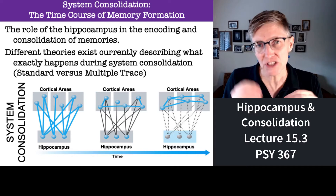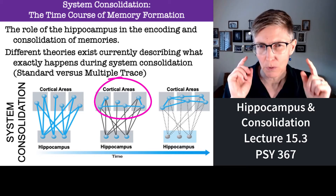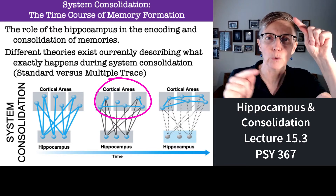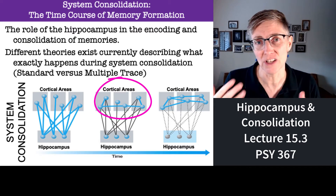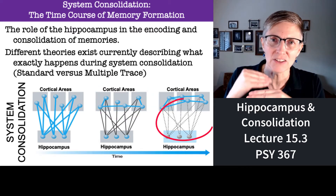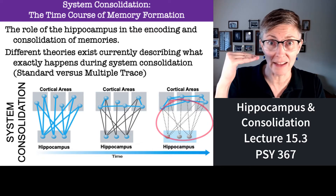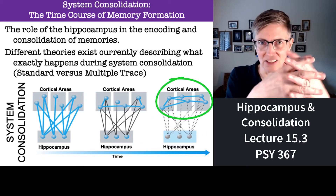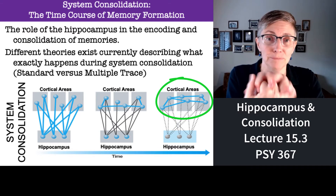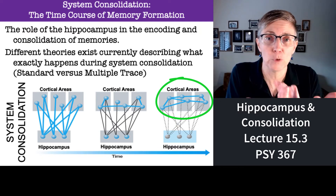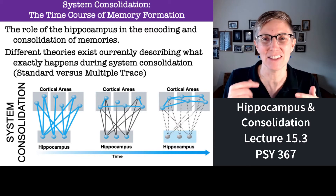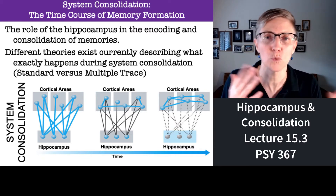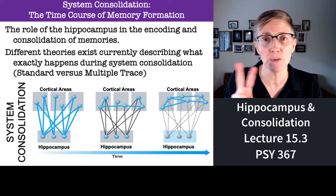Over time, connections are also starting to form between the different cortical areas. We say that consolidation has occurred when you lose the connections between the hippocampus and the cortex, and you gain tight, interconnected cortical pathways within the cortex. How systems consolidation works depends on which theory you follow — I'll tell you about two: the standard model and the multiple trace theory.